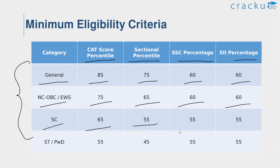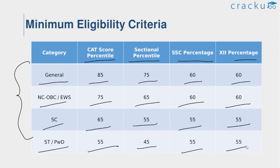For the SC category, the CAT score percentile is 65, sectional percentile is 55, Class 10 percentage is 55, and Class 12 percentage is 55. For the ST category, the CAT score percentile is 55, sectional percentile is 45, Class 10 percentage is 55, and Class 12 percentage is 55. Remember that only candidates who complete the online registration process for IIM Kozhikode are considered for Stage 2.